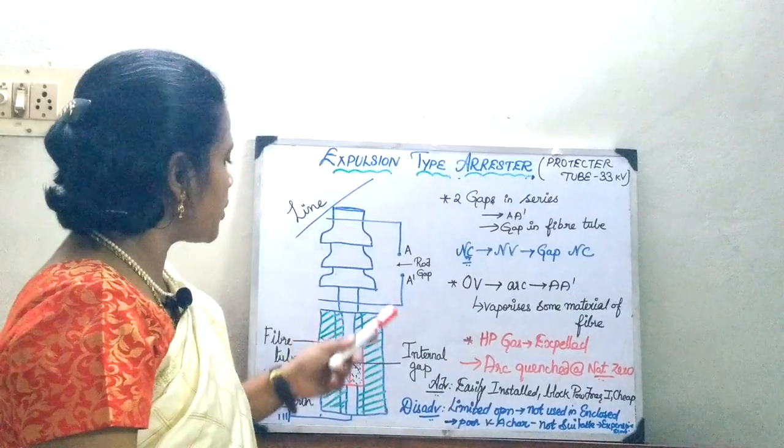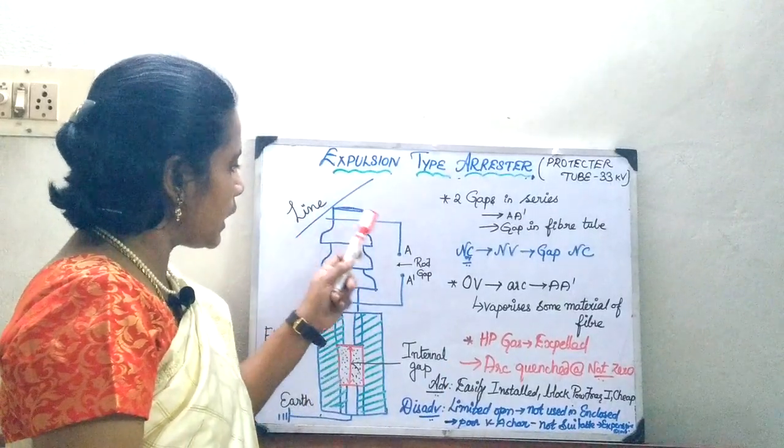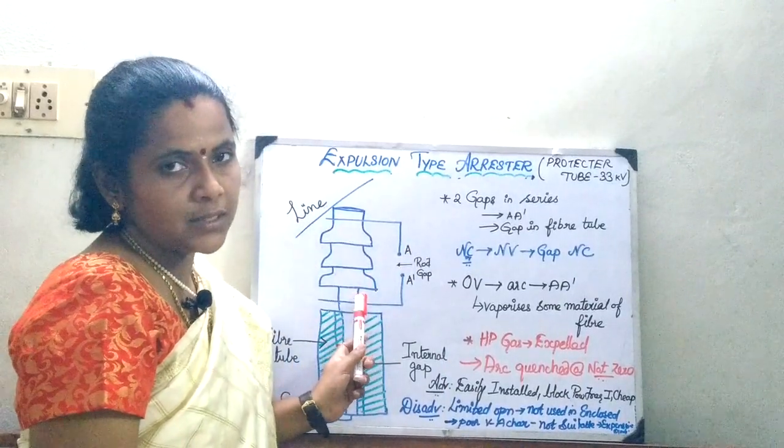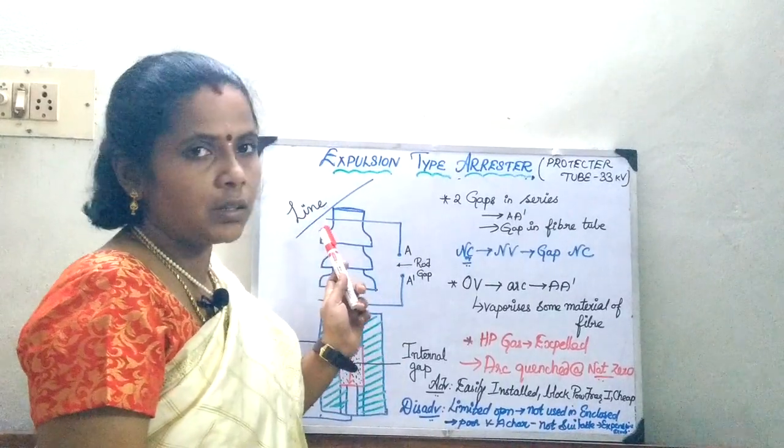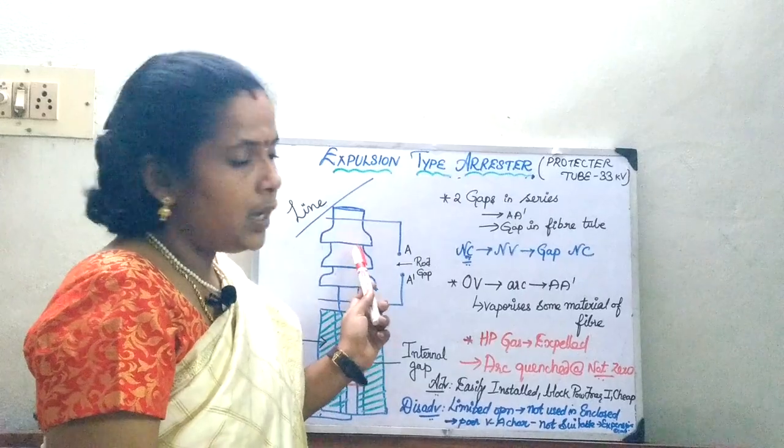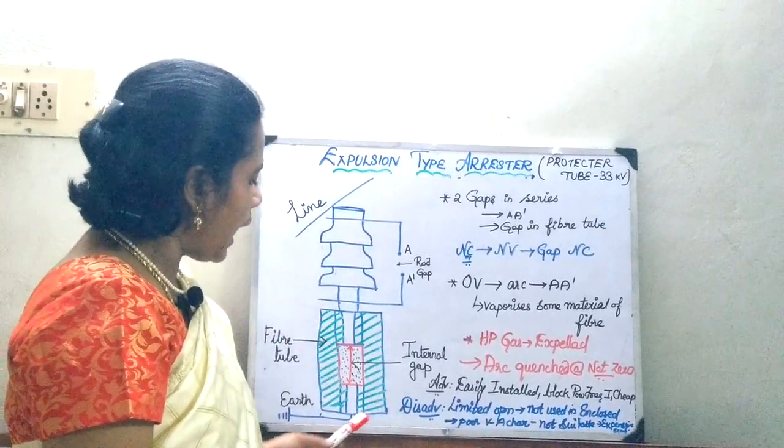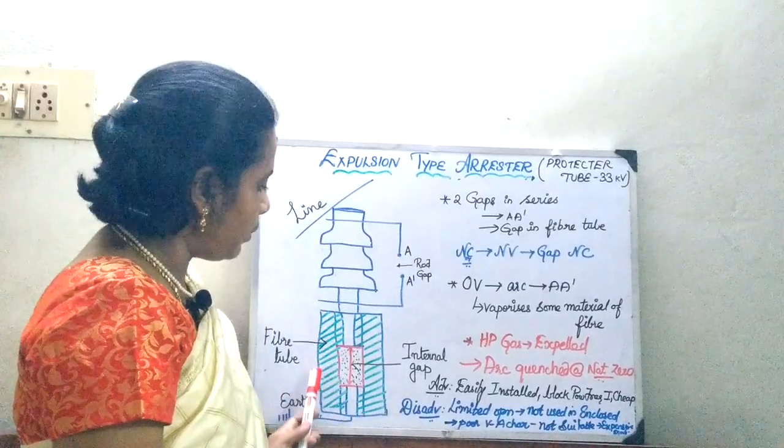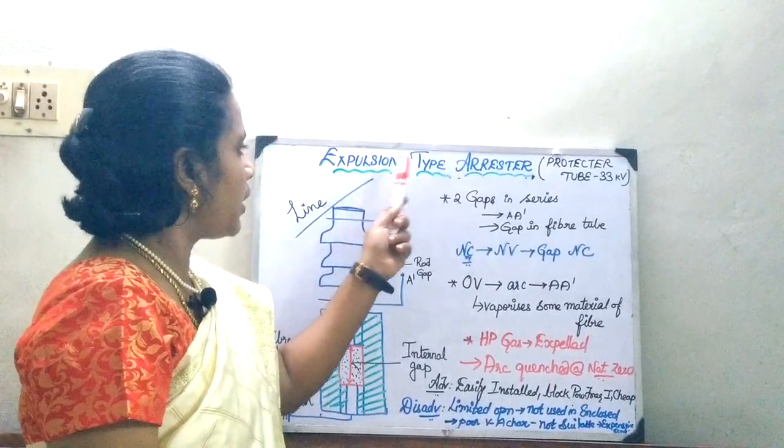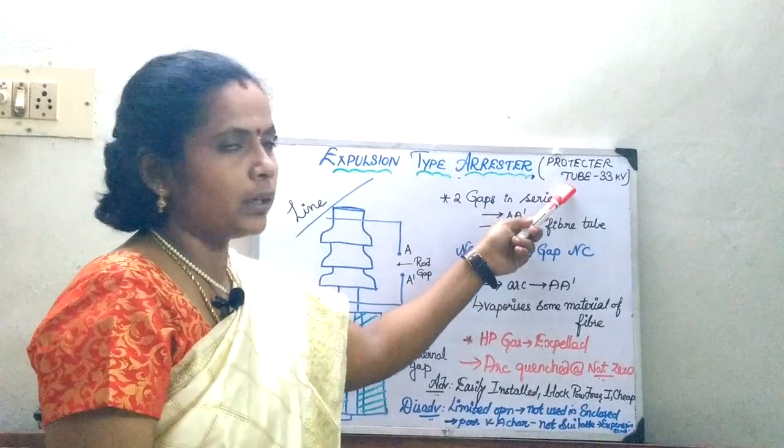Now moving on to the circuitry, this is the circuit which we have already seen, that is the rod gap arrestor which is used for the protection of your transmission line. Here, the additional circuitry is you are going to have an enclosed chamber, a fiber chamber. So this type of arrestor is also called as a protector tube.